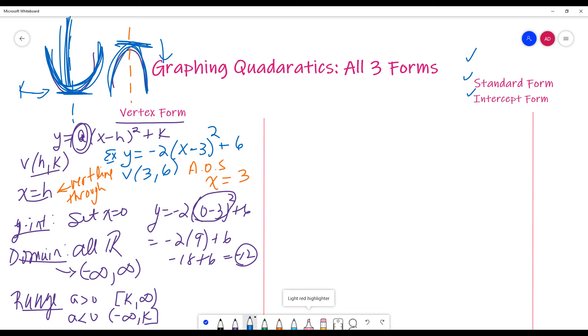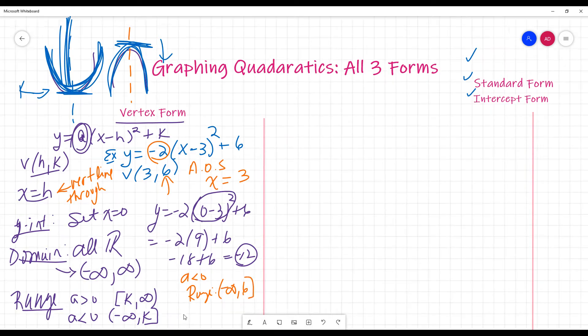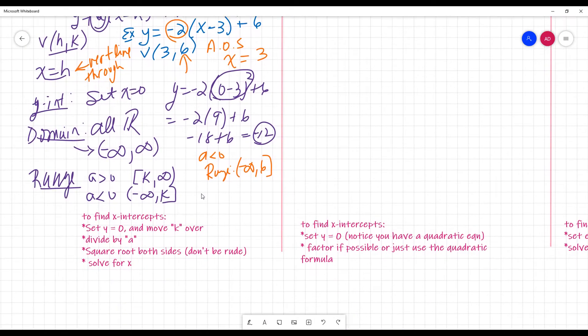So look at the example I have up here. My A is negative two. So since A is less than zero, okay, my range, remember it's the K, not the Y intercept, it's the K. Well, the K in this case is six, so it's negative infinity up to six. I know I'm crammed in there a little bit, but I am trying to kind of keep this all on one board here.